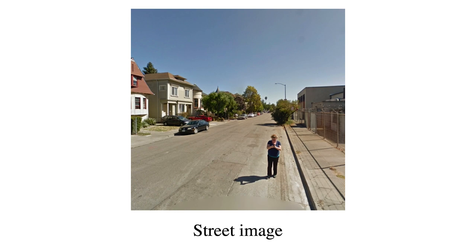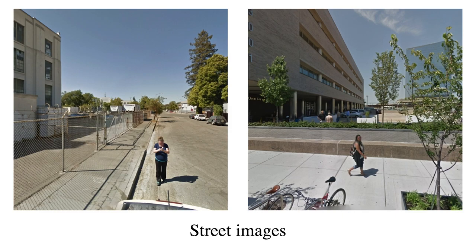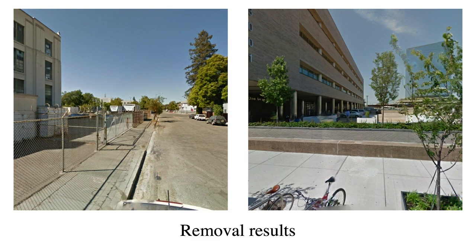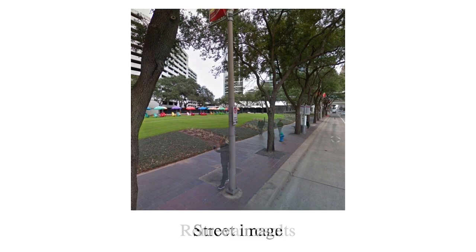Finally, we show results for repopulating street scenes. Our pipeline first removes the existing objects in the scene, then selects objects matching the scene's lighting, places them randomly on sidewalks and roads, and synthesizes realistic shadows. Our pipeline also works on cloudy days, removing and casting subtle soft shadows.